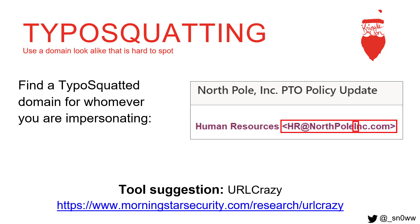Typosquatting is a tactic I've been using a lot lately. How it works is you use a domain that looks very similar to the one you're impersonating. Some examples would be if the domain has a W in it, you would purchase a domain with two V's next to each other, or you would swap two character placements. In the example phishing campaign I created, instead of a capital I, it's just an L and it's really hard to see. You can buy typosquatted domains for internal use, as in the example here, or external — if you're impersonating a vendor or someone outside the organization. A tool I like to use is URLcrazy.